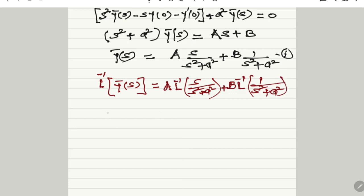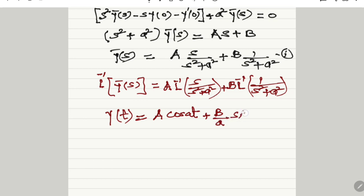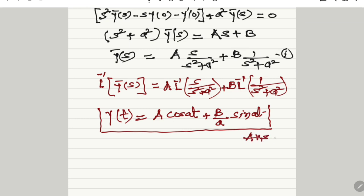Therefore, the inverse of the left-hand side is y(t), and that is equal to a times the inverse Laplace of s / (s² + a²), whose inverse is cos(at) by the standard result, plus b times the inverse Laplace of 1 / (s² + a²), which is (1/a)·sin(at). This is the required solution of the given differential equation obtained by the Laplace transform technique.